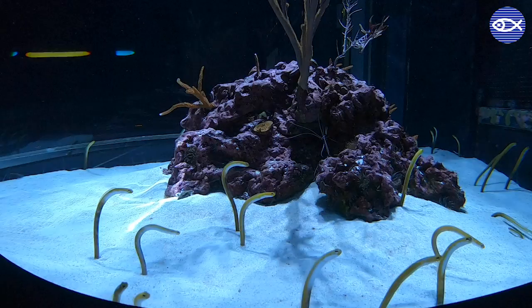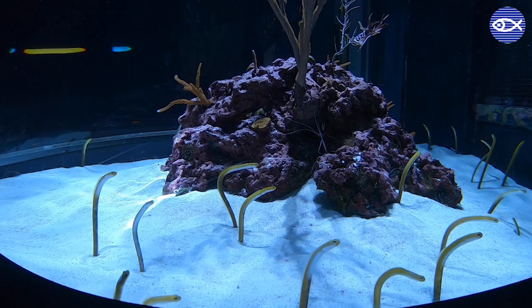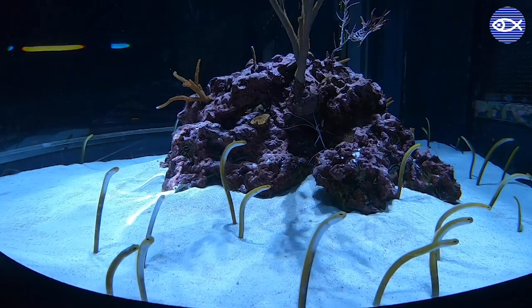Garden eels are slender and sometimes shy seafloor dwellers. You can find them swaying in their exhibit by the top of the giant ocean tank searching for passing morsels of food. However, in the blink of an eye they can all quickly disappear down into their sandy burrows.